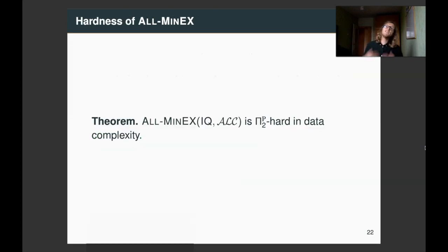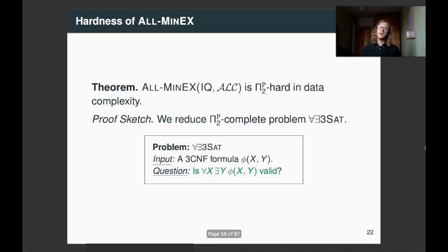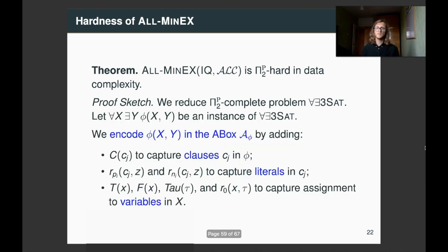Now, we just give a flavor of the hardness proofs. I'm not going to go into much details, I'm encouraged to look into the paper. So, to show that all minex in this case is Π2P hard, we reduce from for all exist 3-CNF, which is a variation of satisfiability. That is, given a 3-CNF formula φ(x,y), where x and y are sets of variables, is for all x exists y, φ(x,y) valid. So, how do we reduce this problem to all minex?